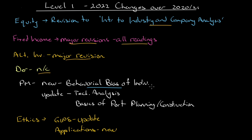In Portfolio Management, there is a new reading — behavioral biases of individuals — brought down from Level 3. There is an update to technical analysis where some of the more unusual content has been taken out. Basics of portfolio planning and construction has had a revision as well. In Ethics, GIPS has had an update and there is a new reading: applications of ethical principles. So almost every section except derivatives has had some sort of change.